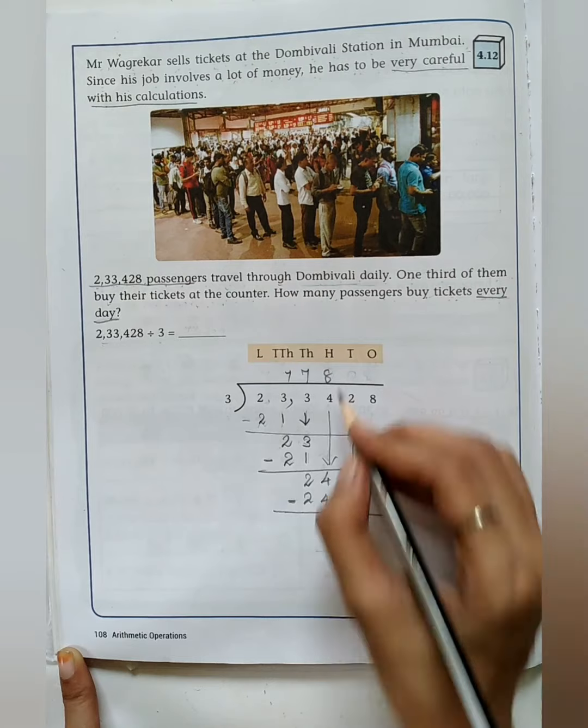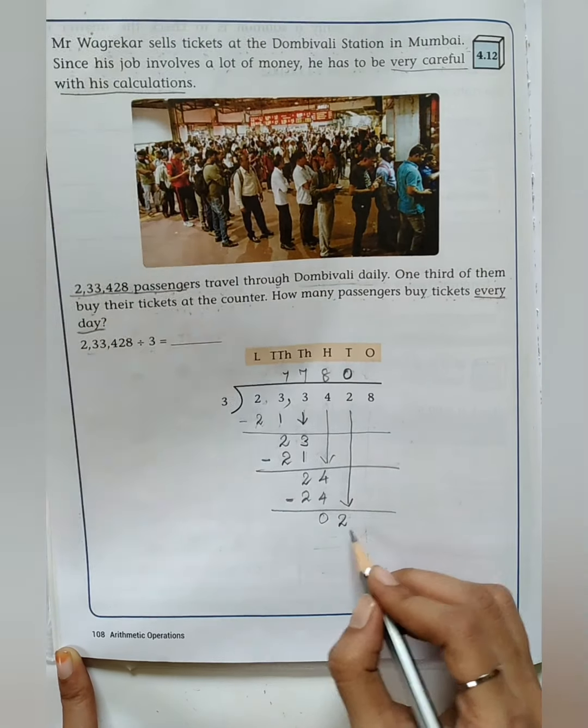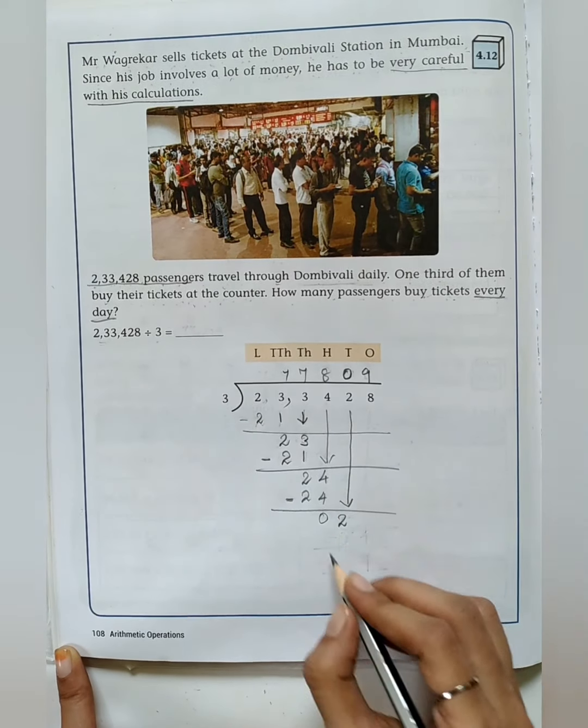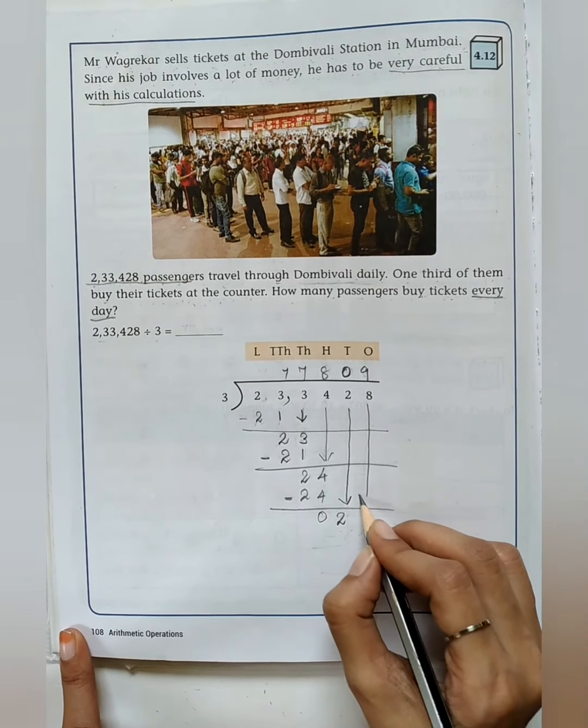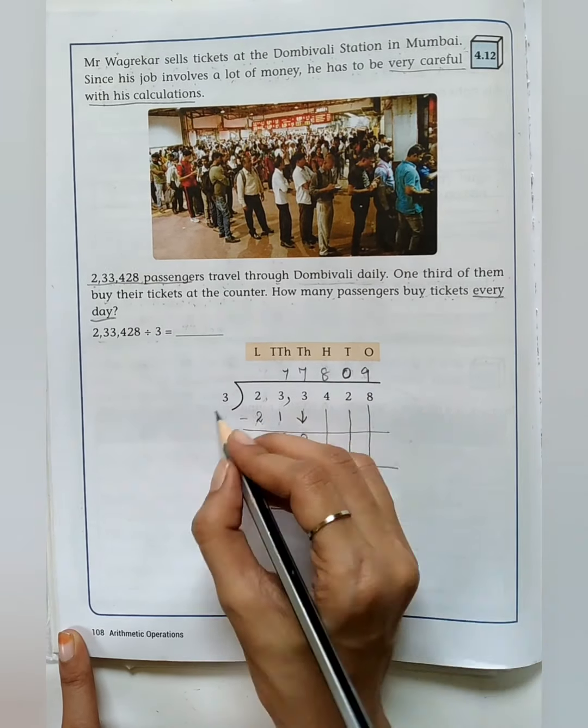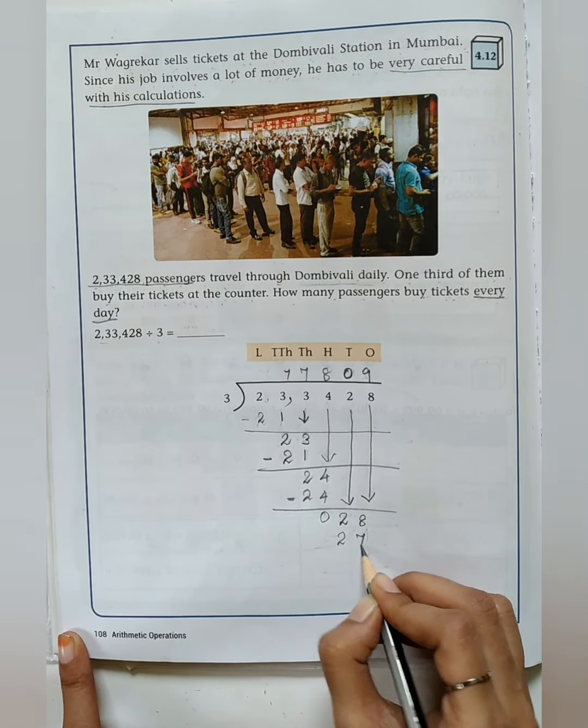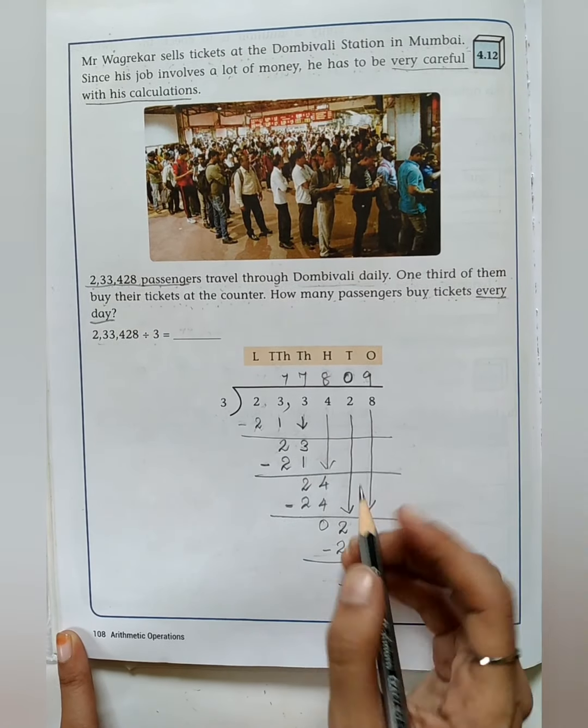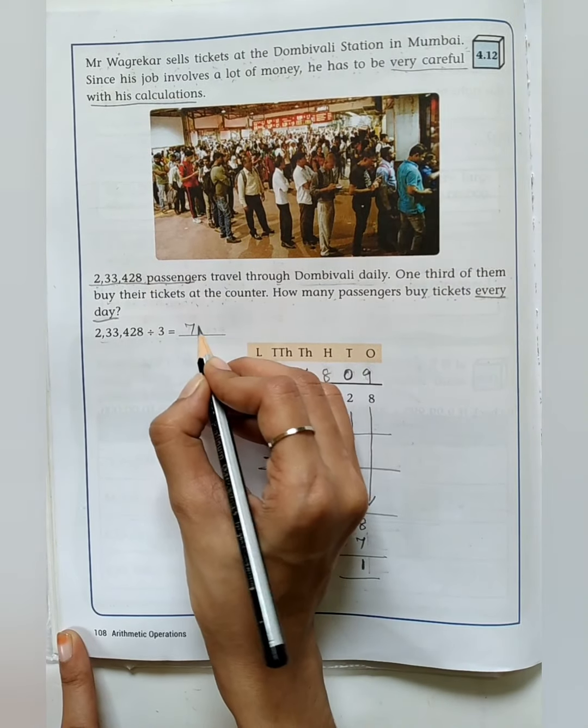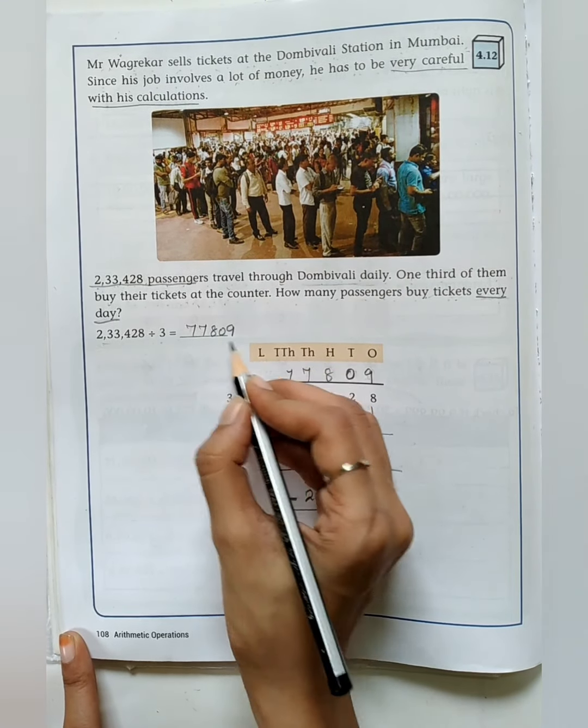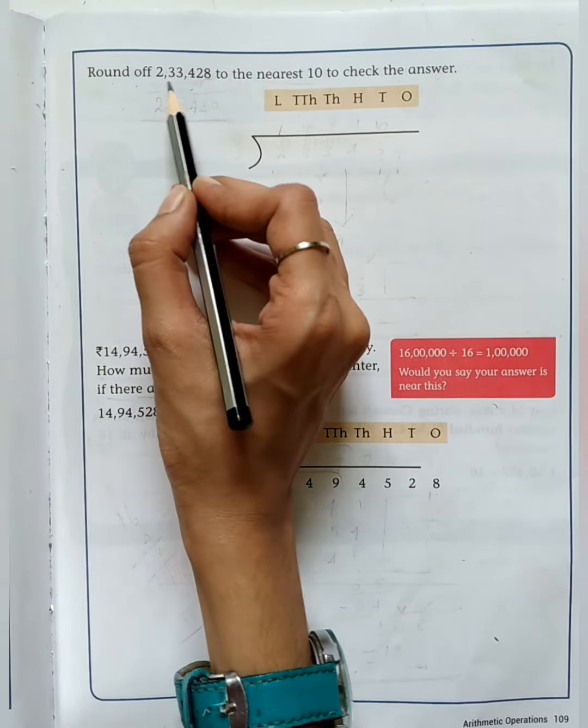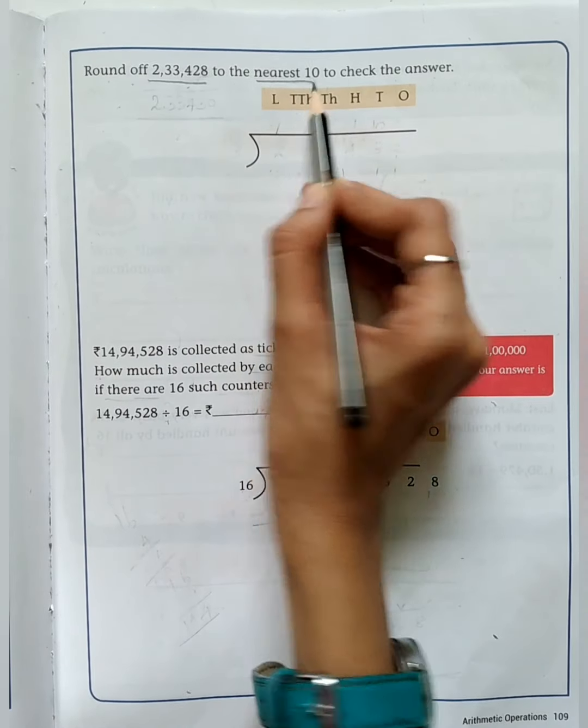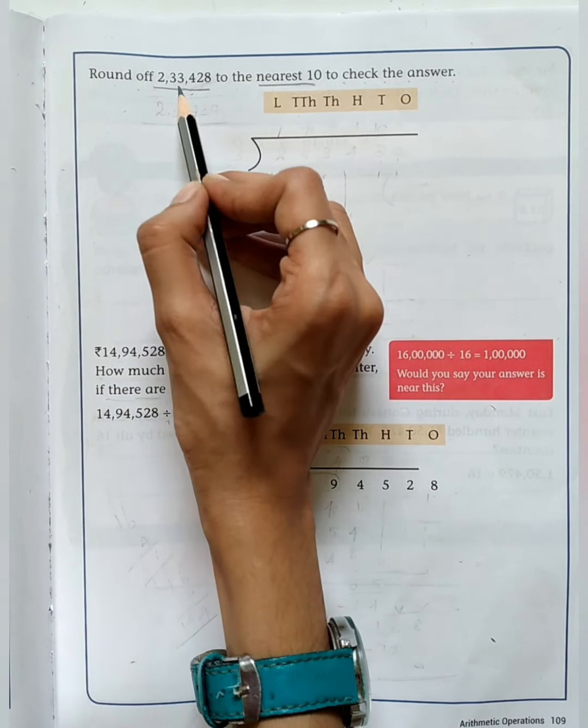After doing subtraction, we have to bring down the next digit because 24 minus 24 is 0. Then bring down 2. 2 is less than 3, so we have to put 0 in the quotient place. Bring down the next digit 8, so I put 9 here. 9 3's are 27. After doing subtraction, the remainder is 1. Now what is the quotient? It is 77,809. Now just move on to the next page.